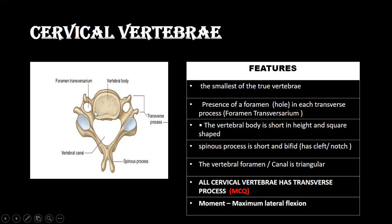The vertebral body is somewhat square in shape and has a small height — so the vertebral body is short in height and square-shaped. The spinous process is short and bifid, meaning it has a cleft, notch, or bifurcation. The vertebral canal, which is present between the vertebral body and the spinous process, is somewhat triangular in shape.